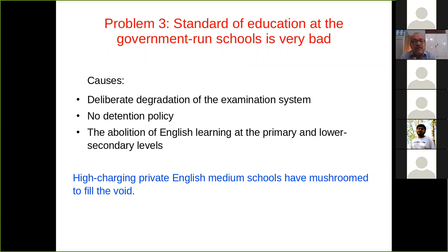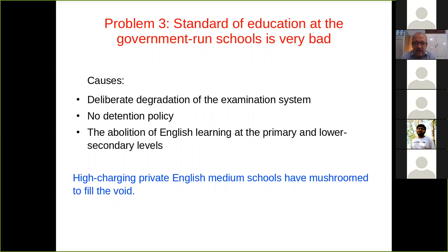The abolition of English in the primary and lower secondary levels has brought down the standard of education in government-run schools, while English-medium private high-charging schools have mushroomed. Even lower-middle-class people nowadays want to send their children to English-medium schools. That's a retrograde thing that has happened.